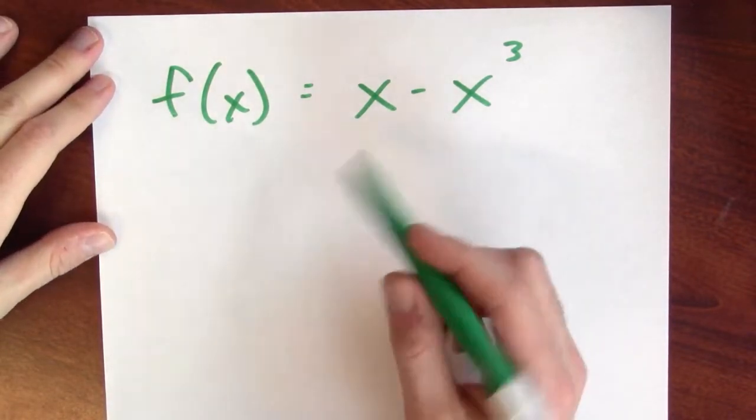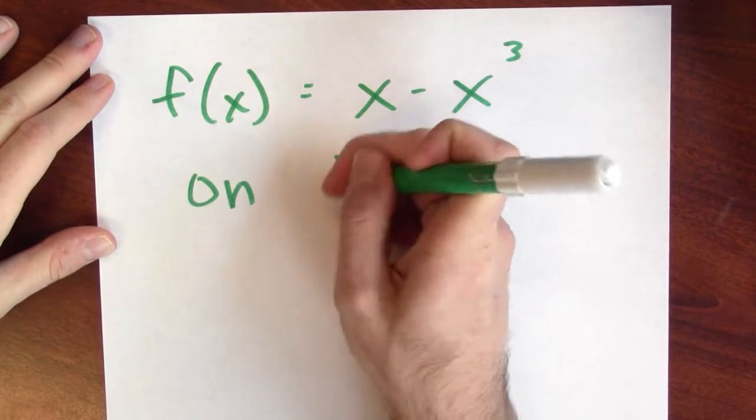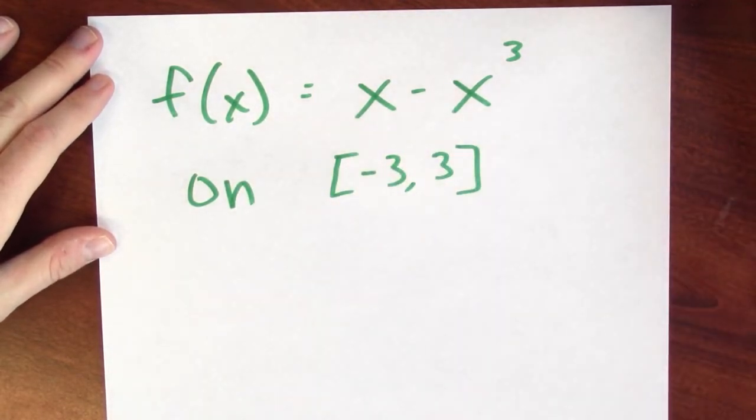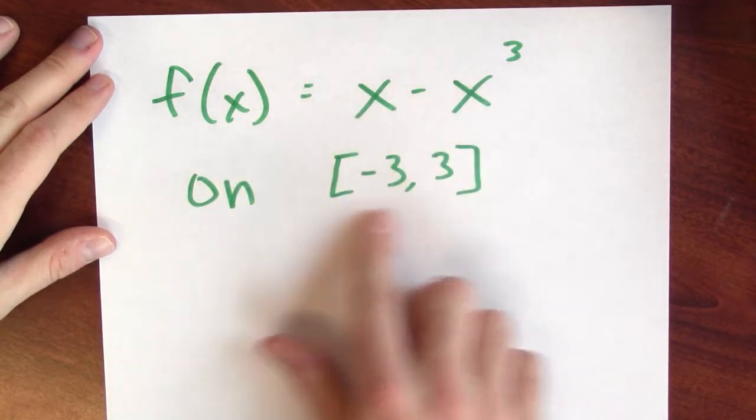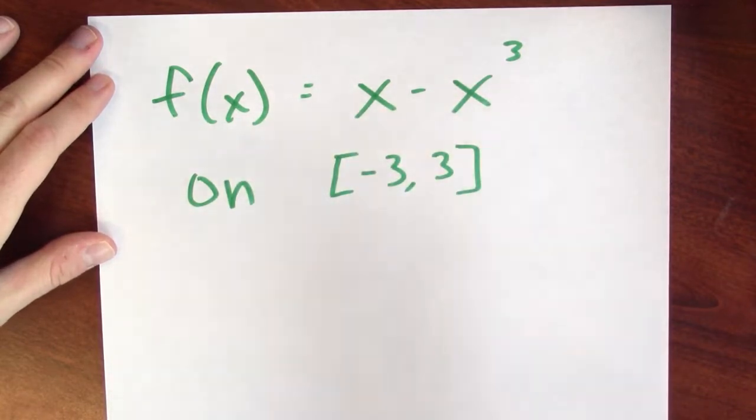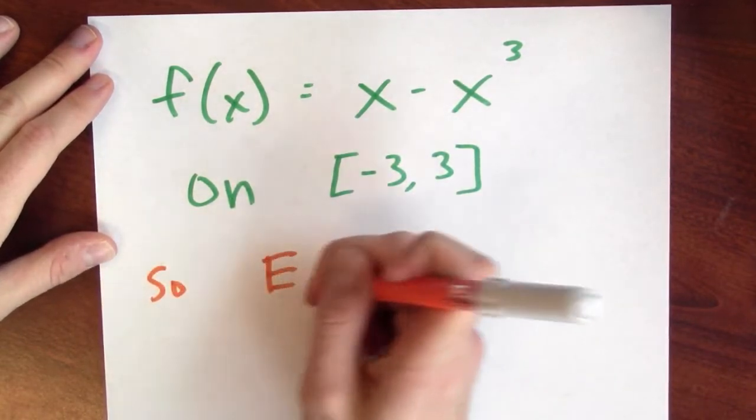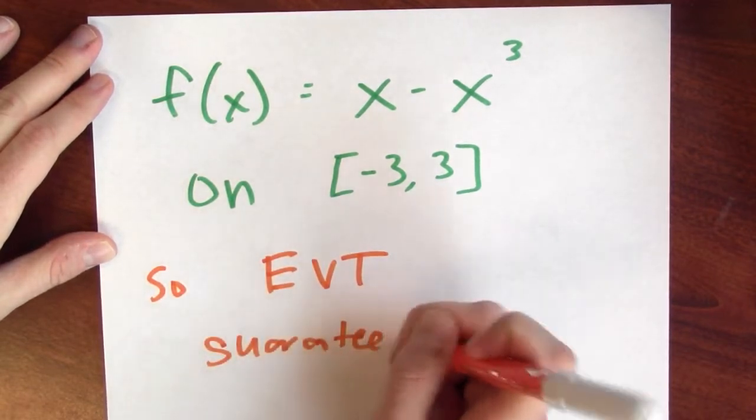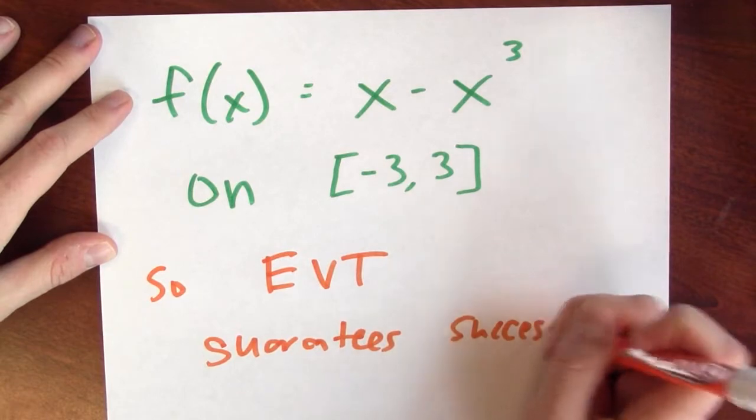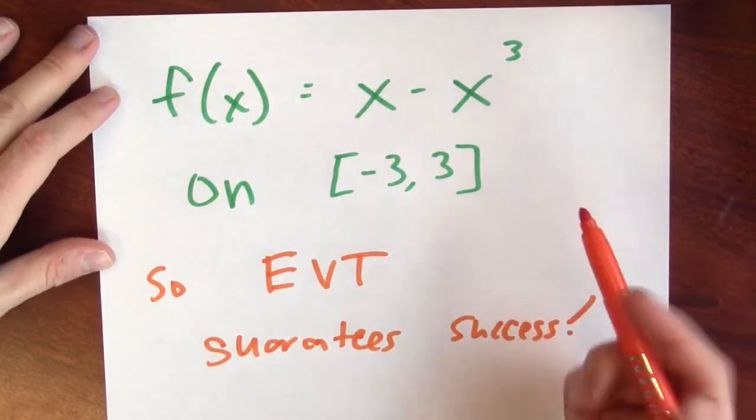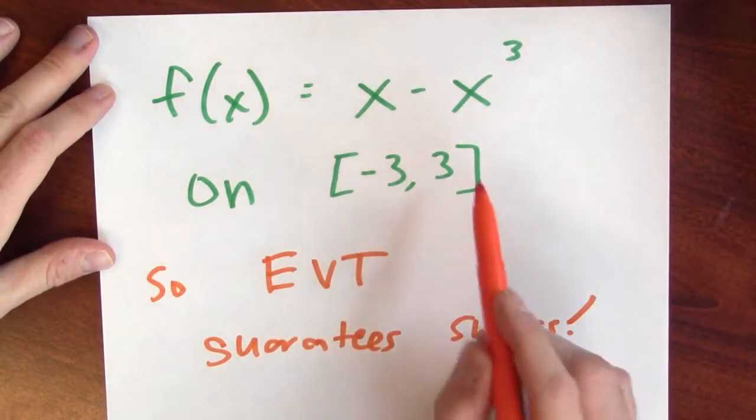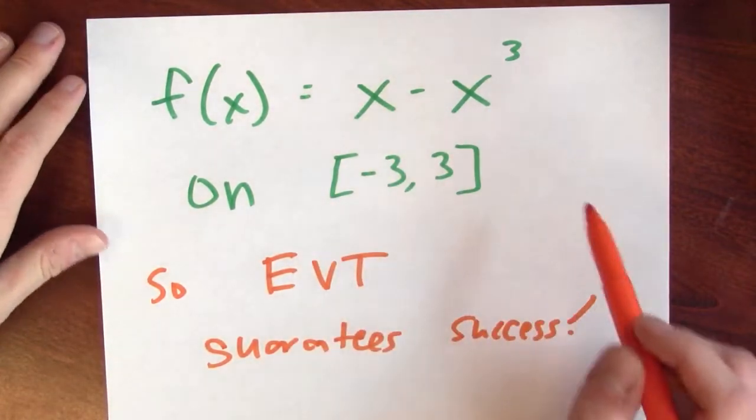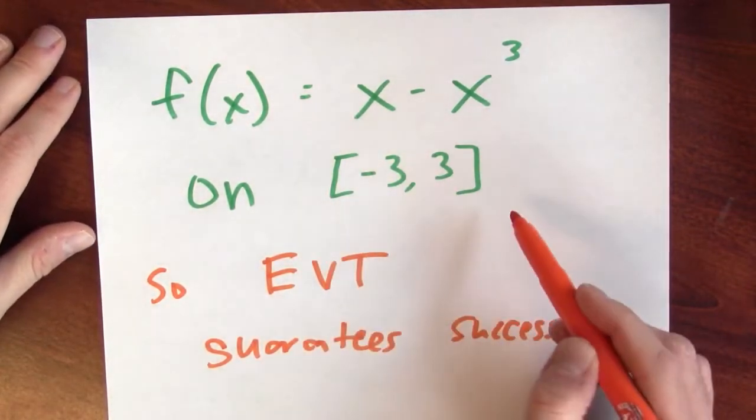What if I want to maximize and minimize this function on the closed interval from minus 3 to 3? This is now a continuous function on a closed bounded interval. So the extreme value theorem guarantees that I'll be successful, right? It guarantees that there is some input which minimizes this function's value and some input which maximizes this function's value on this interval.